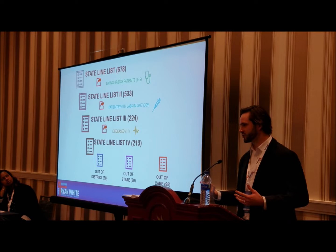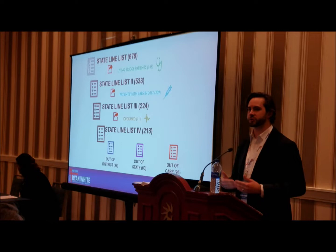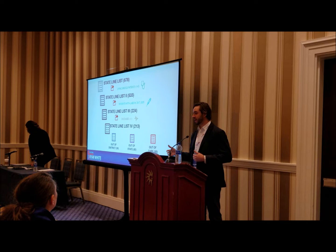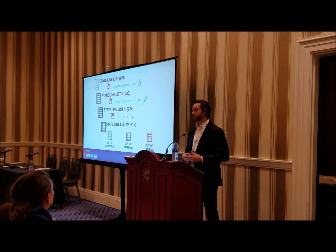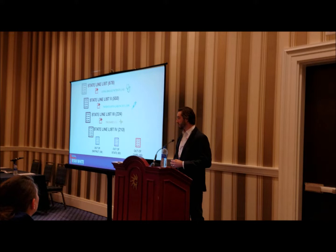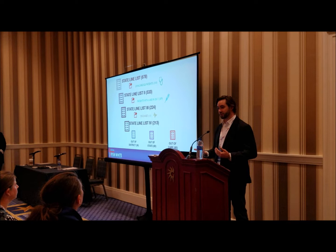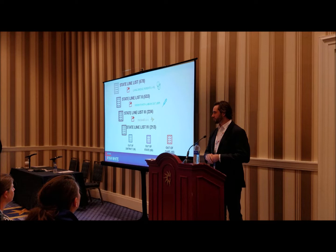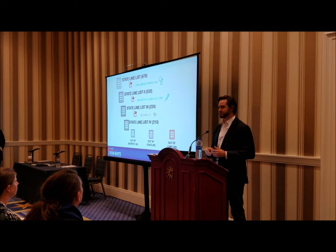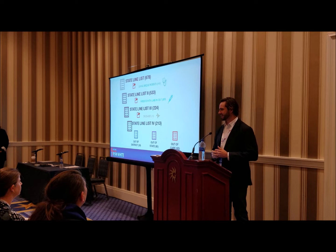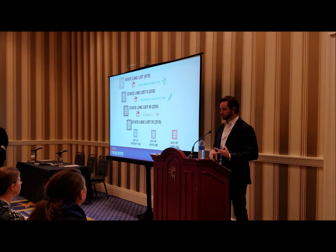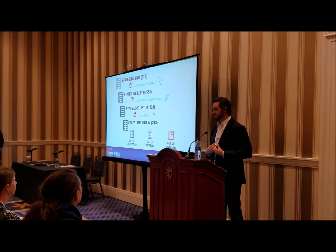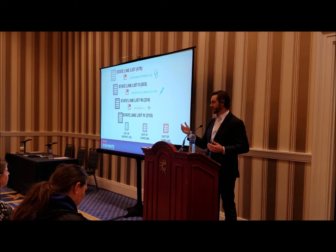We started with a total of 678 patients provided by the state and found that 145 of those we already know about. There are also 69 that the state doesn't know about — that could be because labs are lagging, not getting entered, or because we're taking care of people outside of our district who are coming to us. So we're left with 533. Of those, 309 have a lab within the past year, so they're in care. Of the remaining 224, we acquired a search engine called LexisNexis and searched those 224 names to find that 11 had died, 23 to 38 had moved out of our district, and 80 had moved out of state — some to Utah, California, Las Vegas.